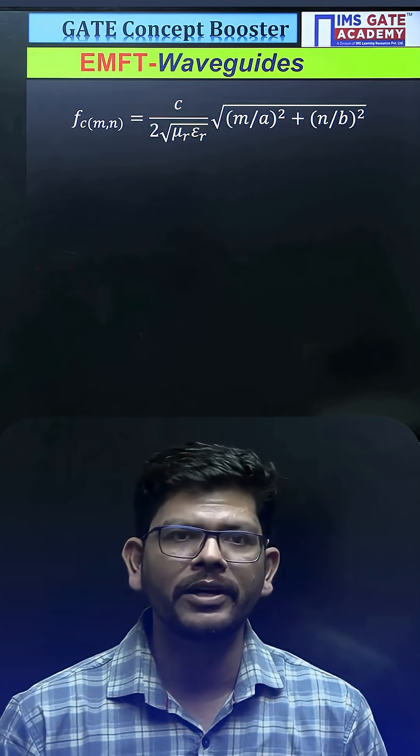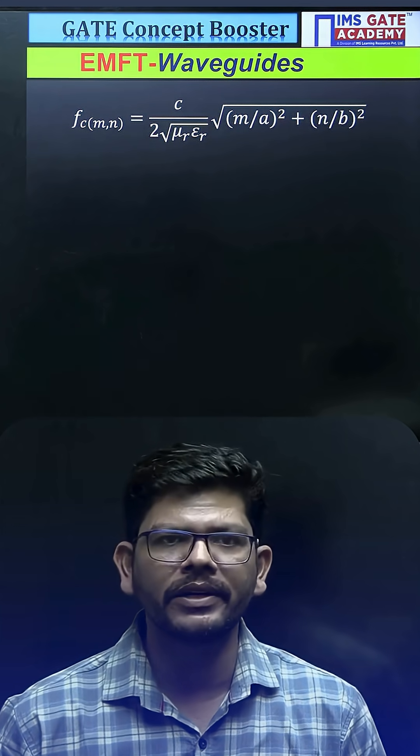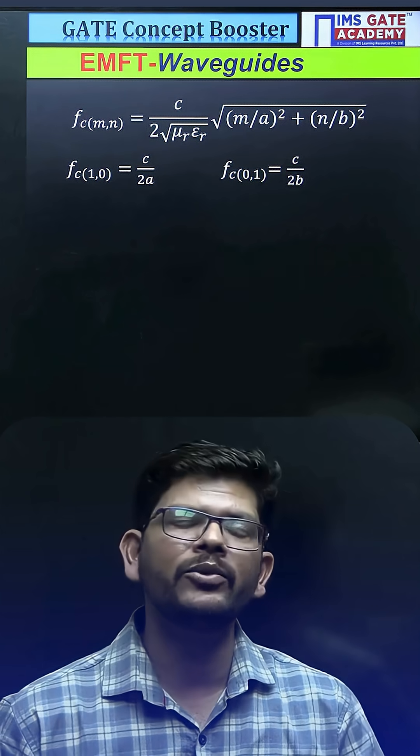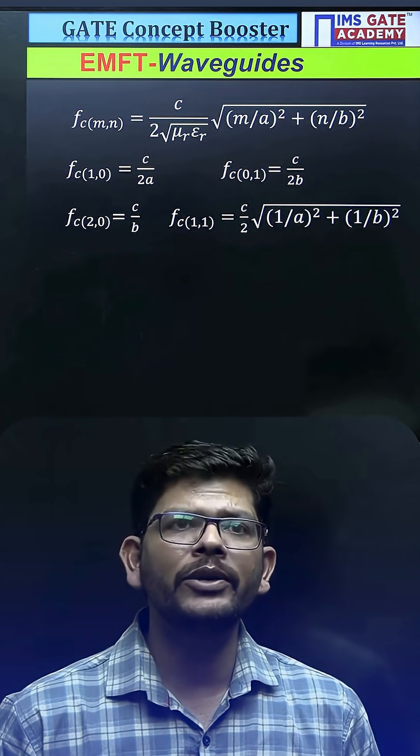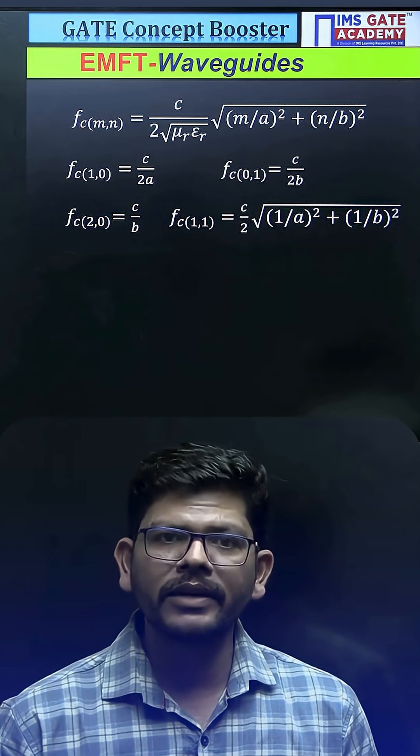You just have to put the mode number here. Since it is air-filled, so μᵣ and εᵣ will be 1. Once you put the values (1,0) and (0,1), you will be getting c/2a and c/2b. When you put the value (2,0), you will be getting c/b. When you put the value of m and n (1,1), then you will be getting c/2 times square root of (1/a)² + (1/b)².